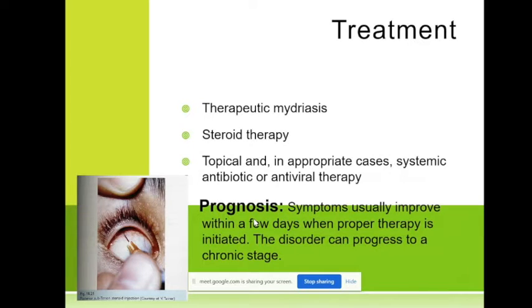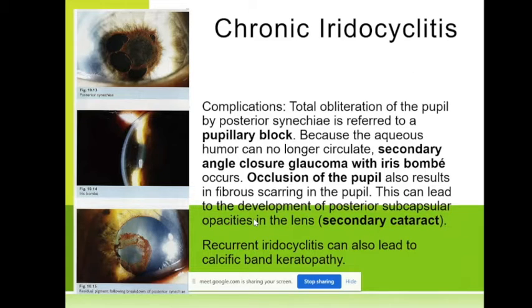It can recur after six months, after one year again. The prognosis is good if we begin with mydriasis and steroid therapy. Acute iridocyclitis usually resolves in about one month. What about chronic iridocyclitis?